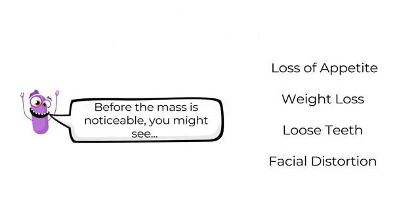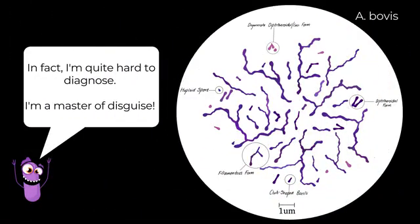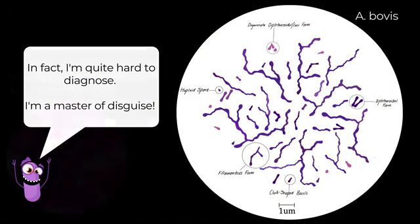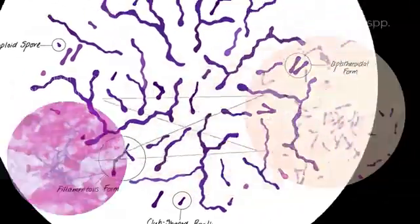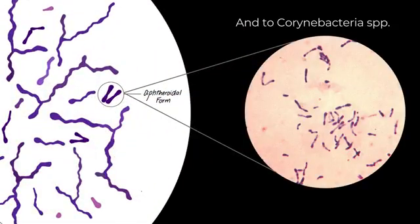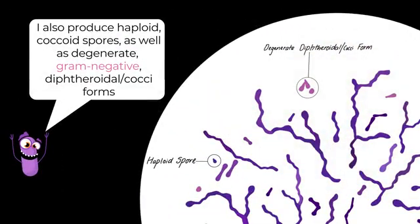Before the mass is noticeable, you might see nonspecific symptoms, which mean I always get confused with my cousin Actinobacillus lignieresii, which causes wooden tongue. In fact, I'm quite hard to diagnose, even under a microscope. I can appear like Nocardia in my filamentous form. In my diphtheroidal form, I look like Corynebacterium. And I produce coccoid spores, as well as degenerate gram-negative forms.